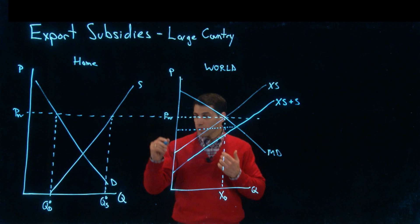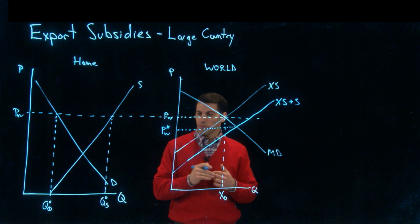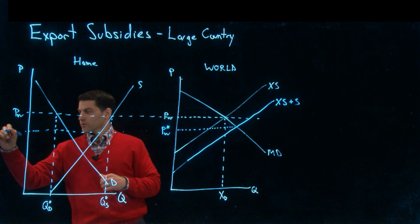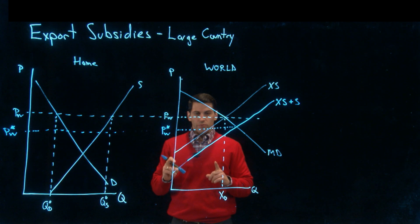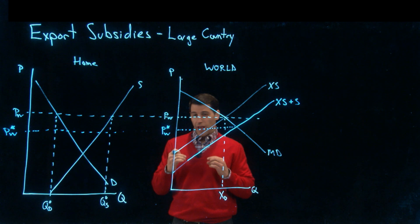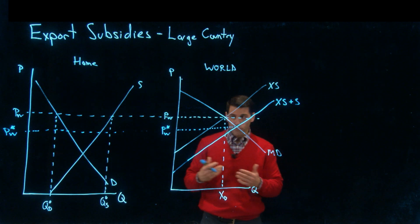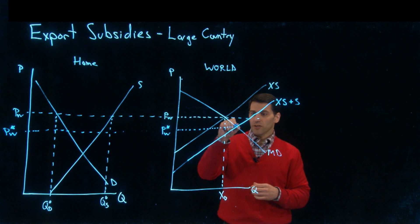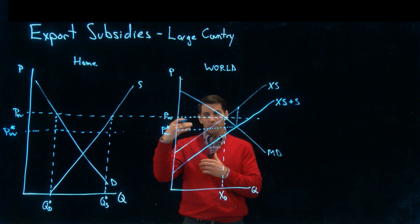Now here is our new world price at PW star. We'll draw that price across, but I want you to pay close attention to the price that's actually received by these firms. Why would firms be willing to sell more at a lower price? It's because the price that these domestic producers are getting when they export is actually given by PW star plus the subsidy.